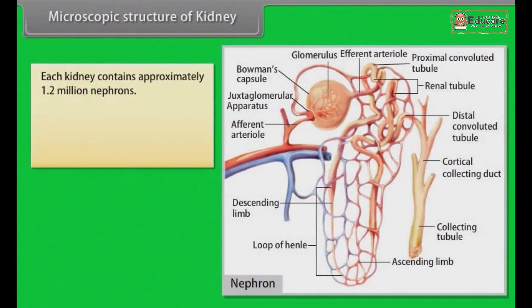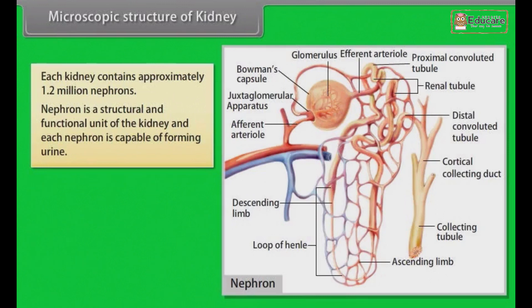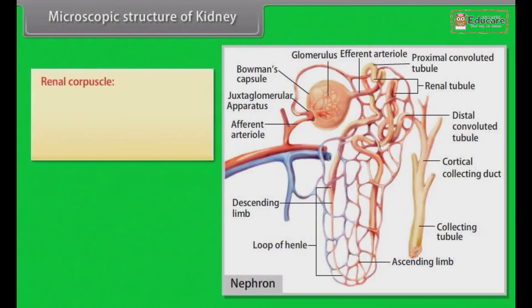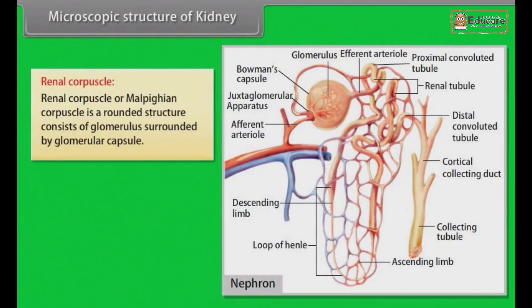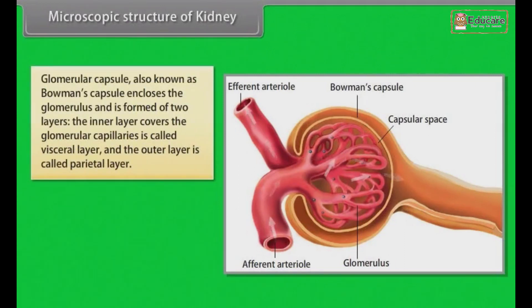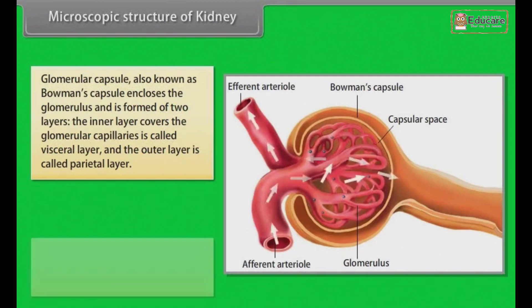Microscopic Structure of Kidney: Each kidney contains approximately 1.2 million nephrons. The nephron is the structural and functional unit of the kidney, and each nephron is capable of forming urine. A nephron consists of two major parts: the renal corpuscle and the renal tubule. The renal corpuscle, also called the Malpighian corpuscle, is a rounded structure consisting of glomerulus surrounded by a glomerular capsule. Blood enters the glomerulus through an afferent arteriole and leaves through an efferent arteriole. The glomerular capsule, also known as Bowman's capsule, encloses the glomerulus and is formed of two layers — the visceral layer and the parietal layer.